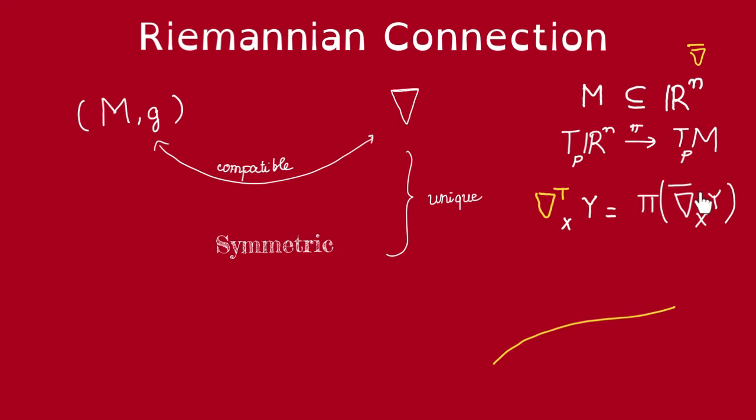But we have a projection map from each such tangent space to the tangent space to M at P. So the projection of this vector field gives us a vector field over M. We call this the tangential connection.